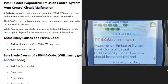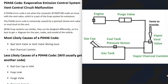Today I'm talking about a P0446 code — what it is and how you go about fixing it. A P0446 code is an evaporative emission control system vent control circuit malfunction. Modern vehicles have what's called an EVAP system that takes the gas vapors from the gas tank and feeds them back up to the engine to get burned off so they don't escape into the atmosphere. This is for emissions, and when you get a P0446 code, the computer is seeing a problem with one of these components.